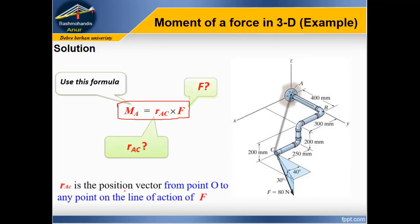rAC is a position vector from point A to any point on the line of action of F. Point A position vector to C - this one.